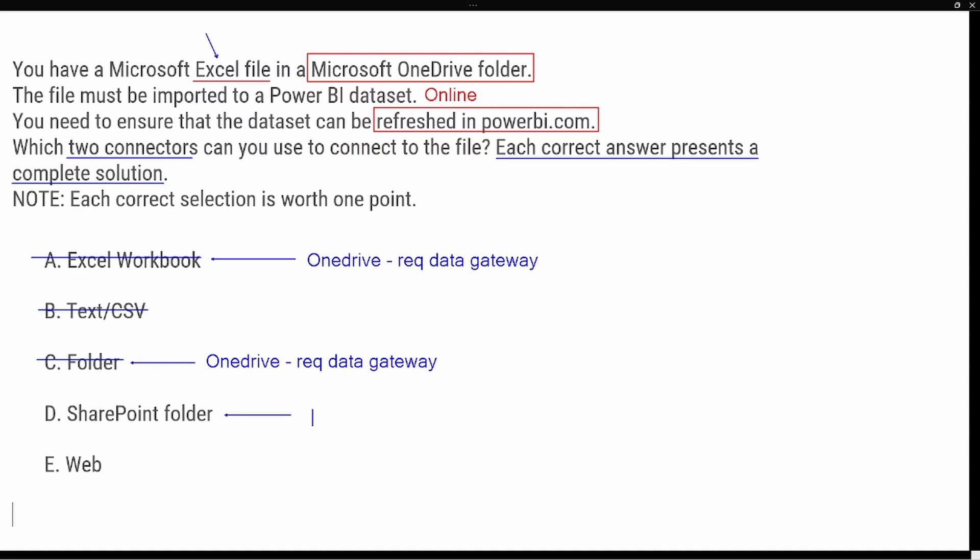Because the SharePoint folder is online, connecting to a file that's online means we are not going to need a data gateway in order to refresh this source. We're going to use the root URL to connect into that SharePoint folder that's synced with our OneDrive account. This presents one option that is a complete solution — no additional items are needed, no data gateways needed in order to refresh.